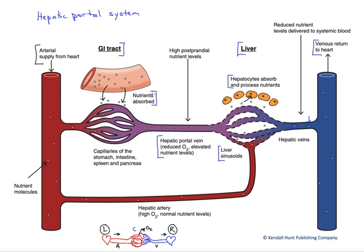The nutrients absorbed through the portal system are largely carbohydrates and amino acids — monosaccharides and amino acids. Fats, by contrast, are absorbed into the lymphatic system at the GI tract wall. This bypasses the portal system and delivers fats directly into the venous circulation, where lymphatic vessels join up with large systemic veins in the upper thorax. As a result, blood fat levels actually rise dramatically in the postprandial state, as opposed to monosaccharides and amino acids.